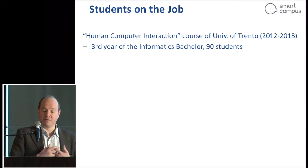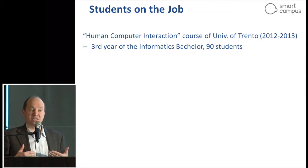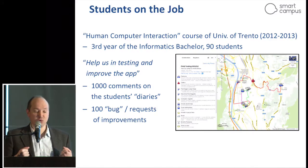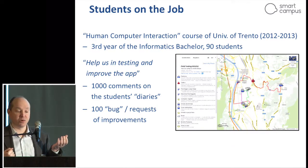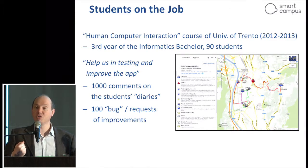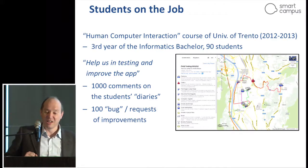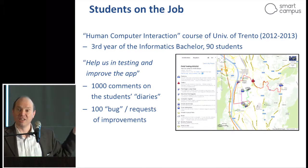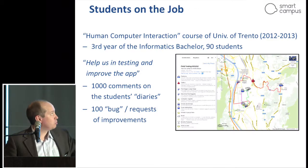The first important result was achieved within a course offered by the bachelor degree in computer science one year ago — a course with 90 students on human-computer interaction, very relevant for our activities. We asked the students to help test and improve the six initial apps. We got more than 1,000 comments in their diaries and more than 100 bug reports. Students were very creative: one group took our mobility app, used it during a day moving around Trento, and reported the effectiveness and problems using Google Maps in a way we would never have thought to propose.